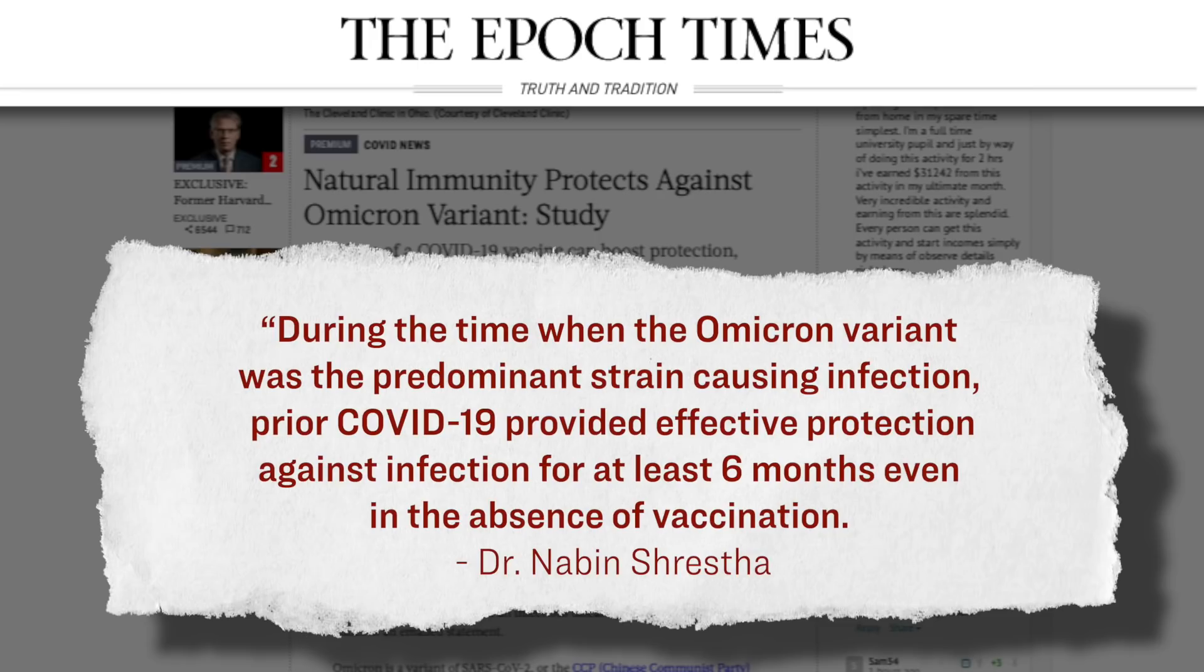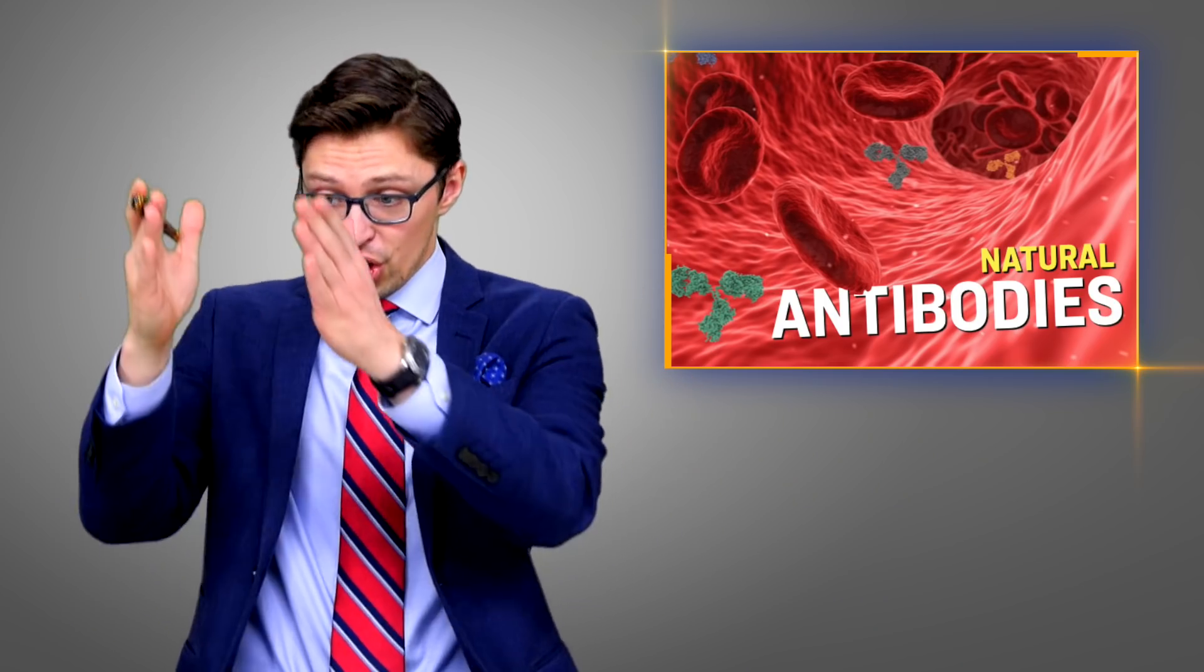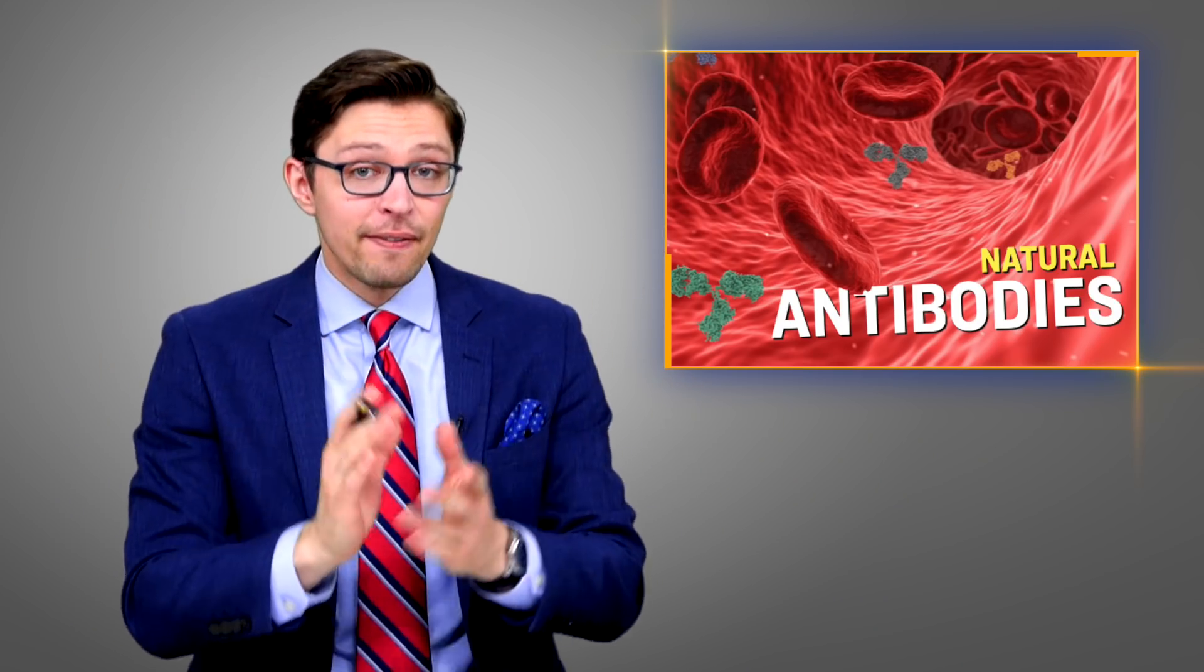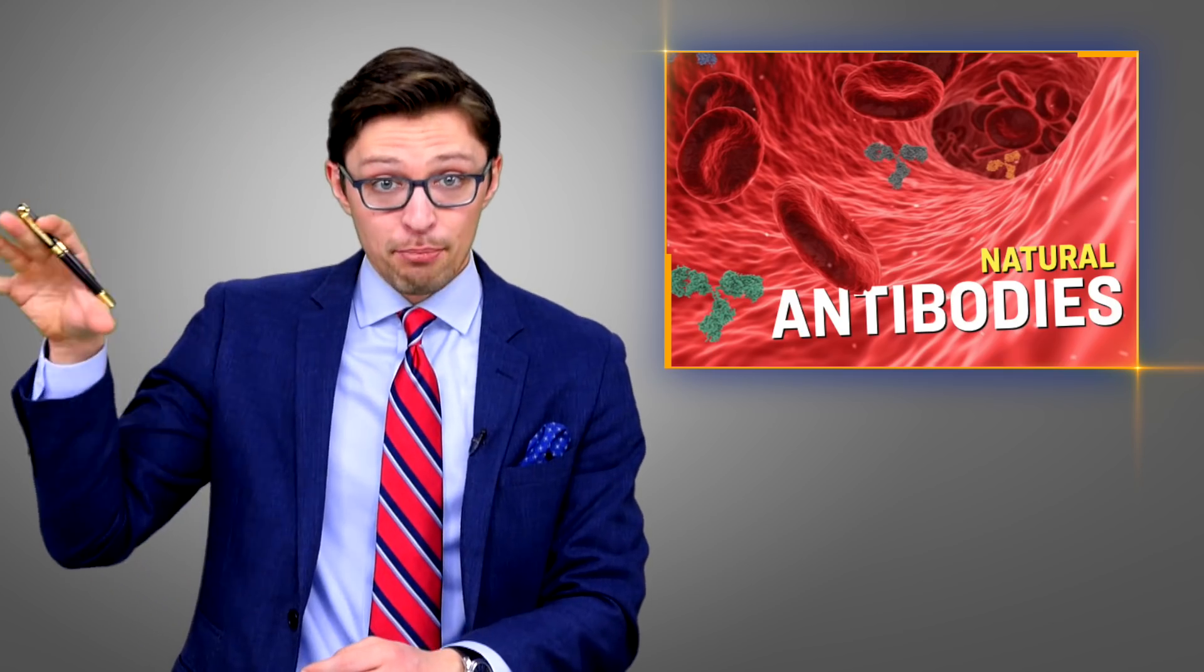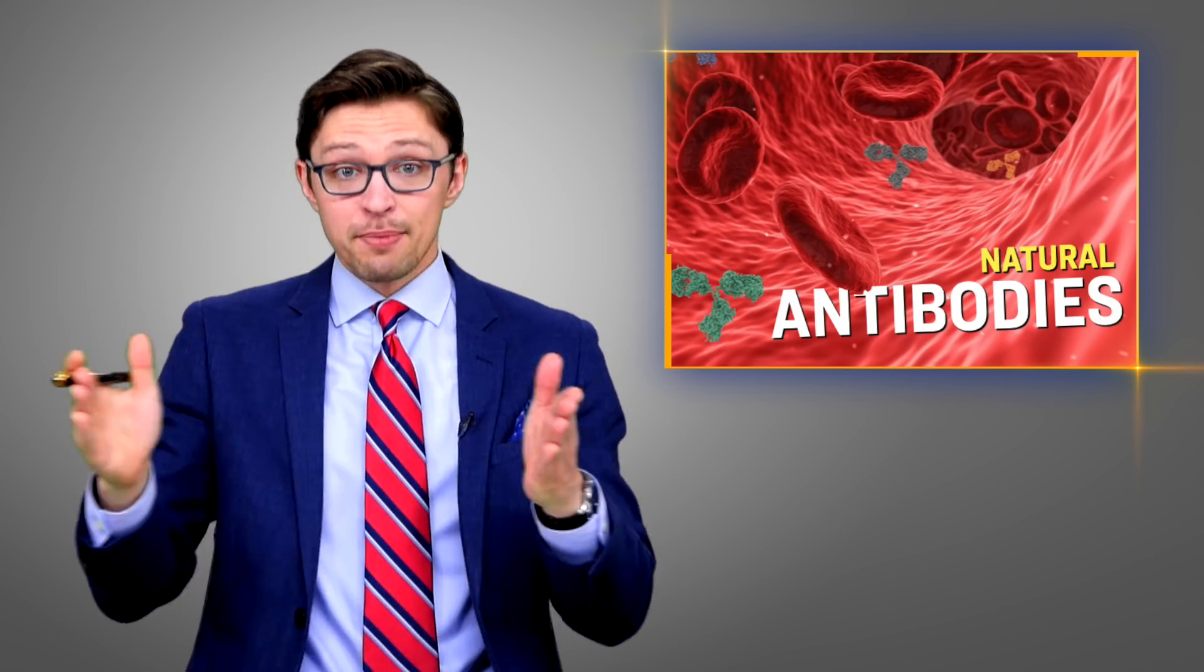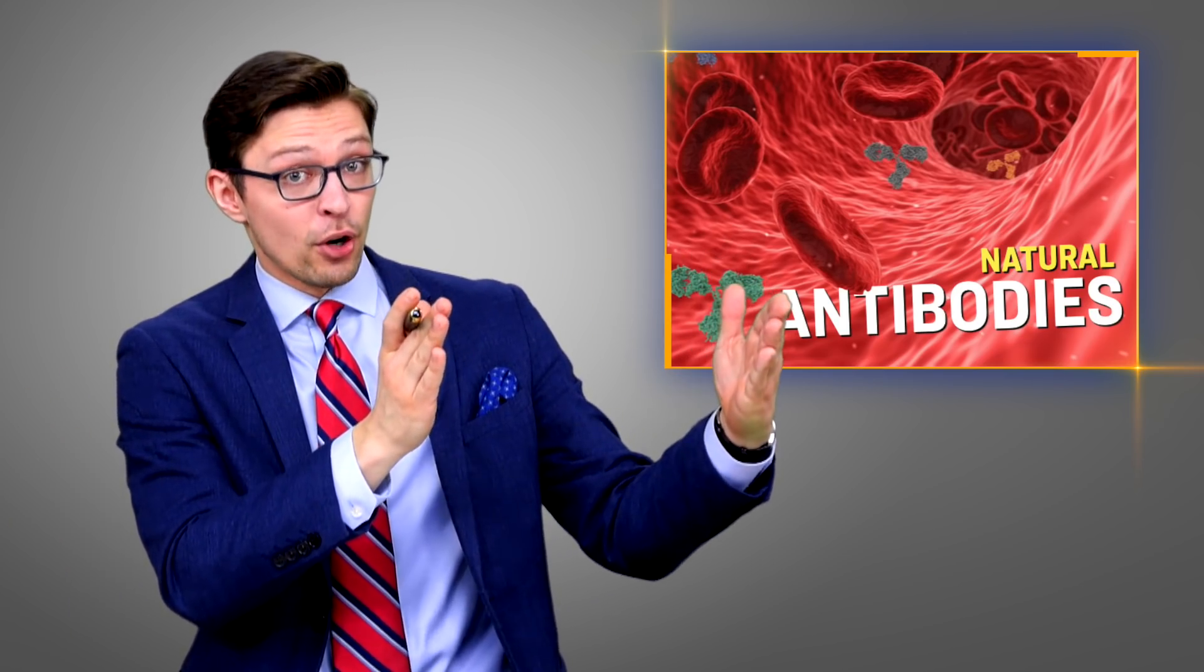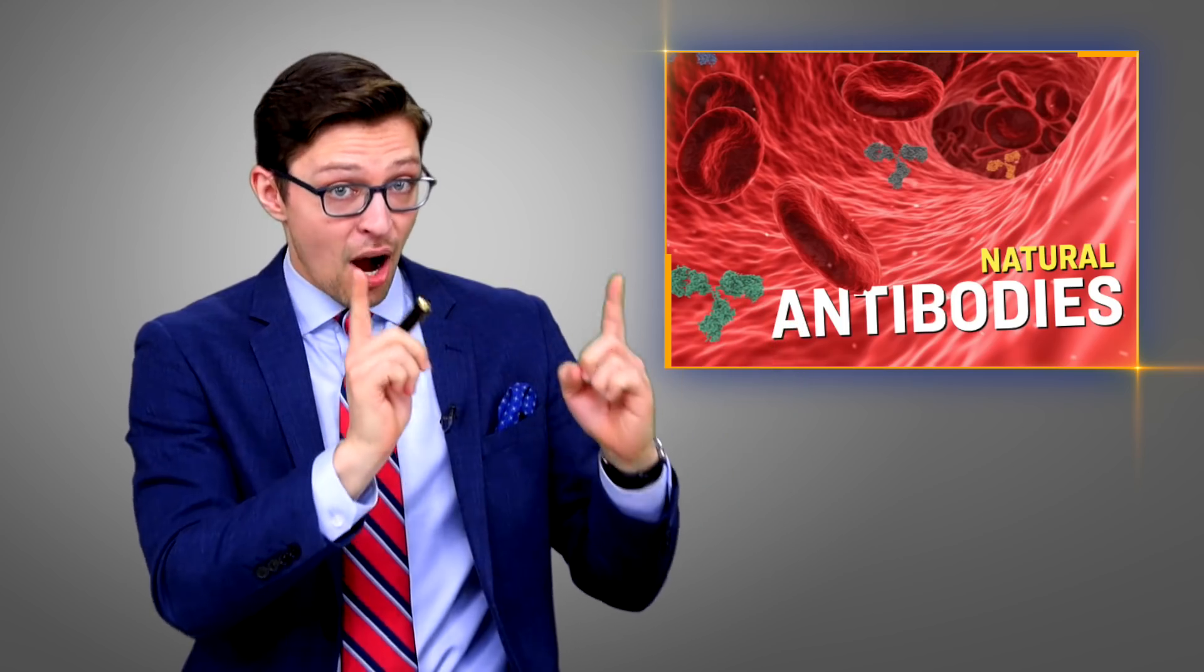As he mentioned, when the researchers were looking at the data chronologically, they found that natural immunity appeared to wane at about the six-month mark following the prior infection. For the first six months, the employees appeared to be very well protected, but then those same employees became more likely to test positive for COVID after the six-month mark.